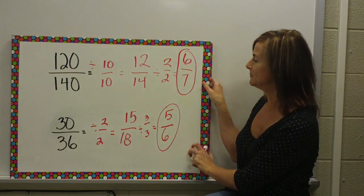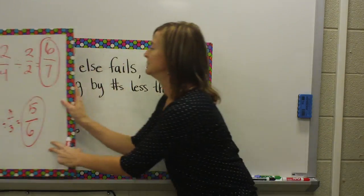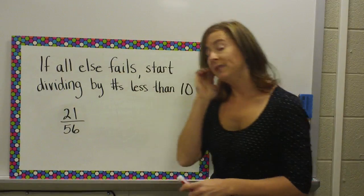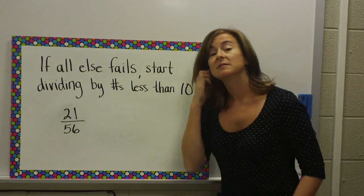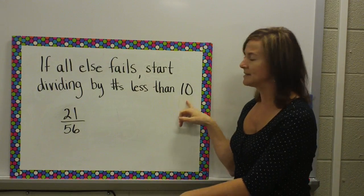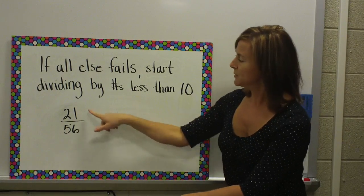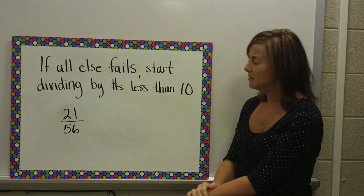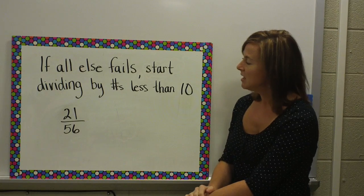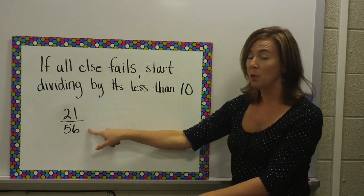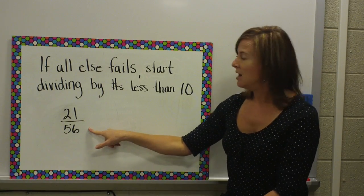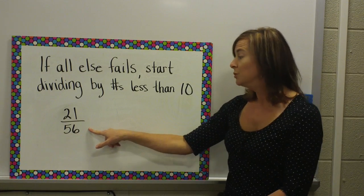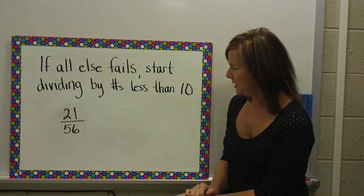Let's take a look at some other examples. Remember that I said when all else fails, start dividing by numbers less than 10 and keep going. So, here's a problem where I have 21 over 56. And, again, they both are not even, so I know that 2 will not work. So, then I go to 3.